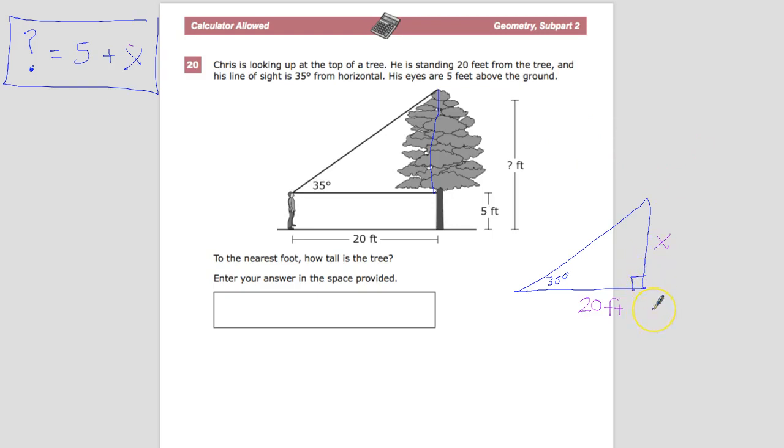Why would I choose trig as opposed to something else? Well, I have a right triangle, which means probably I'm going to either use trig or Pythagorean theorem or special right triangle. This is 35, so that's not a special right triangle number. So that's out.